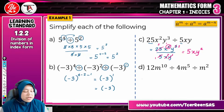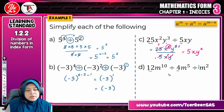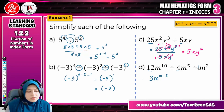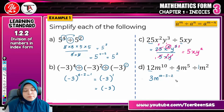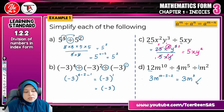Here is the final question for example 1. Take 12 divided by 4, which is 3. So the coefficient becomes 3. For M: you take the index 10, and because this is division you minus 5, and then because there is another division you minus another 2. So 10 minus 5 is 5, and 5 minus 2 is 3. The final answer is 3M to the power of 3.